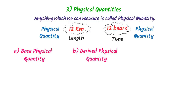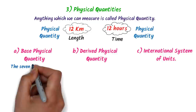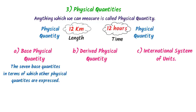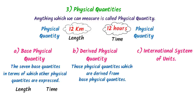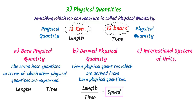The seven physical quantities in terms of which other physical quantities are expressed are called base physical quantities — for example, length and time. Those physical quantities which we can derive from base physical quantities are called derived physical quantities. For example, when we divide length by time, we get speed. Since length and time are both base physical quantities, speed derived from them is a derived physical quantity.